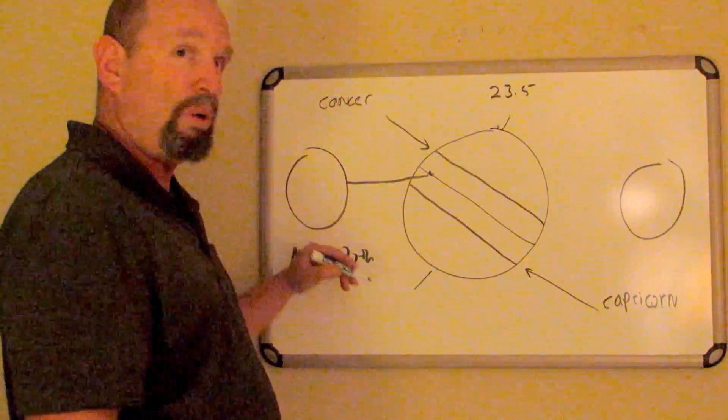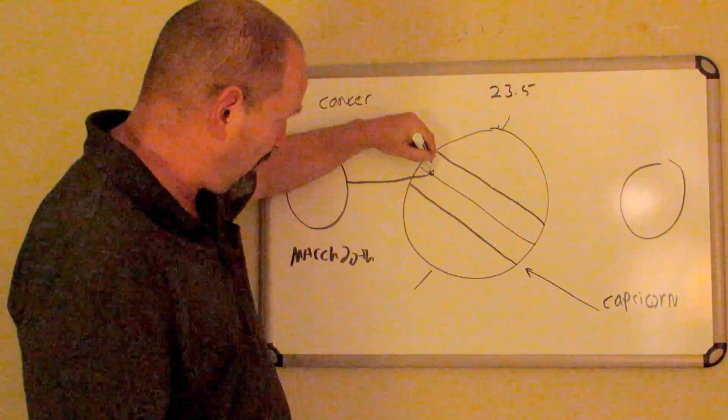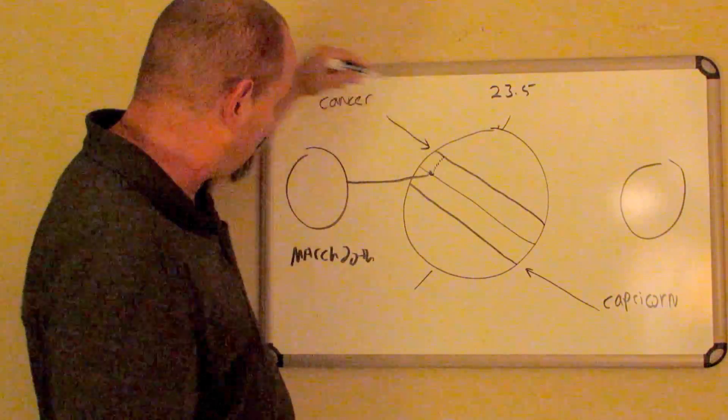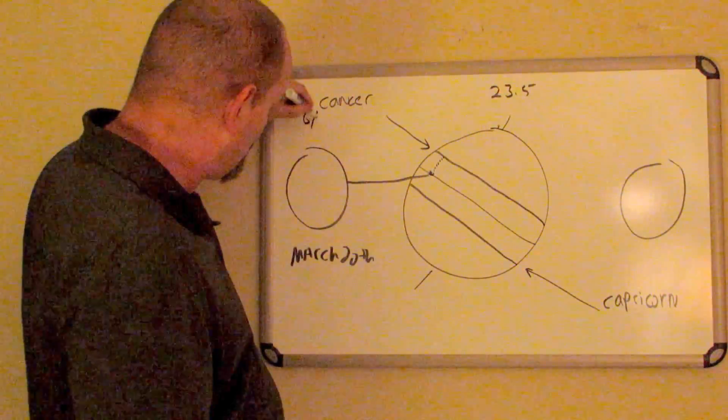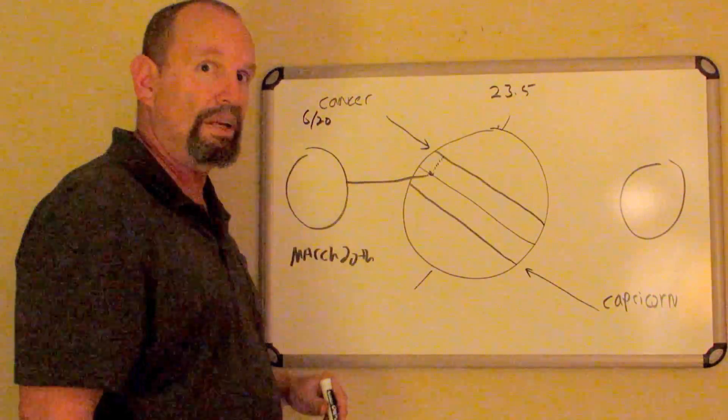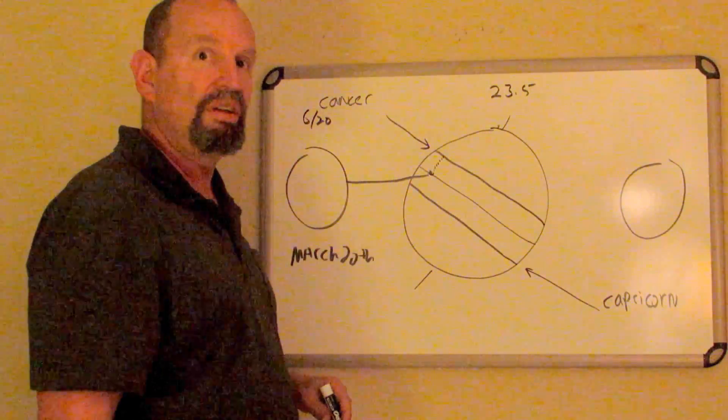From March 20th forward, the sun begins to move further and further north until you get to June 20th and you reach what's called the Tropic of Cancer. This is what we call the summer solstice.